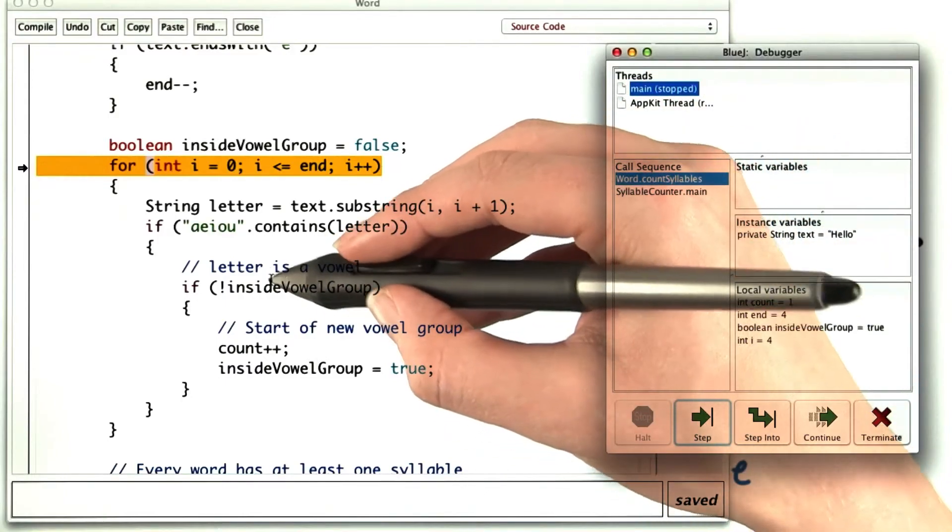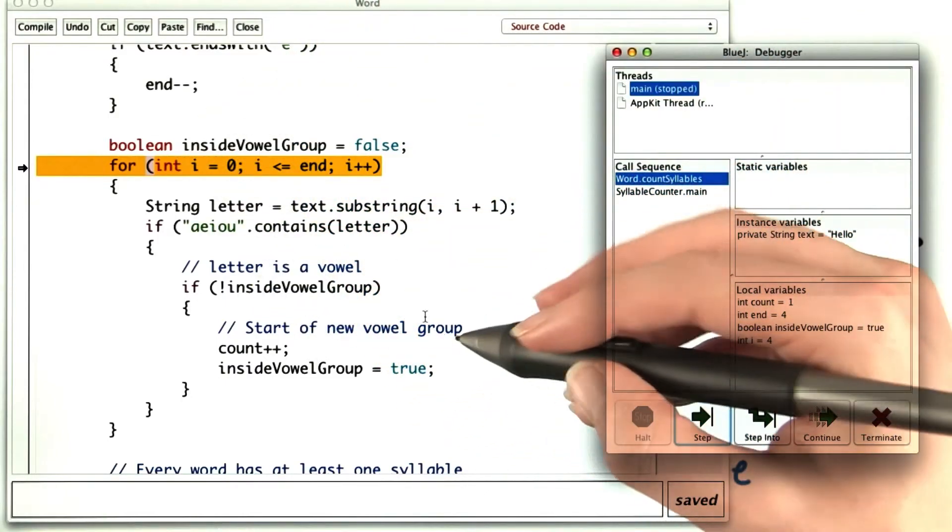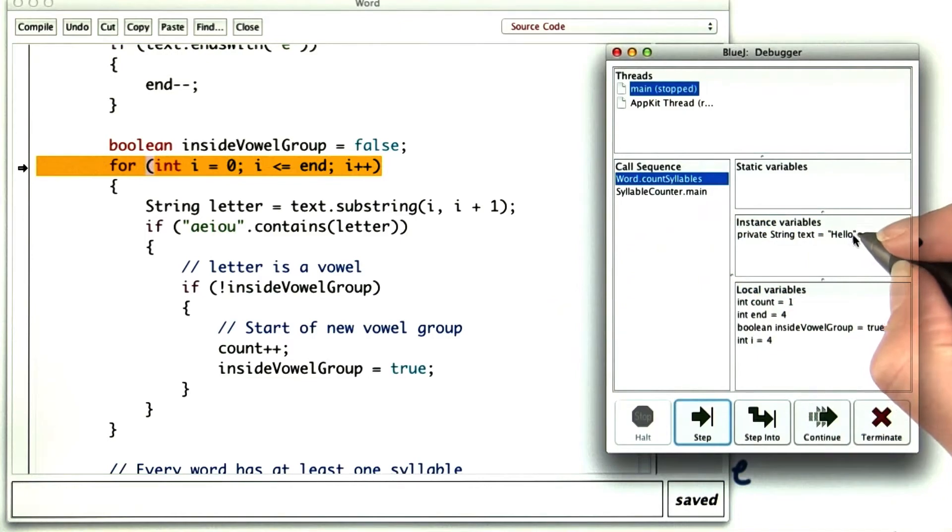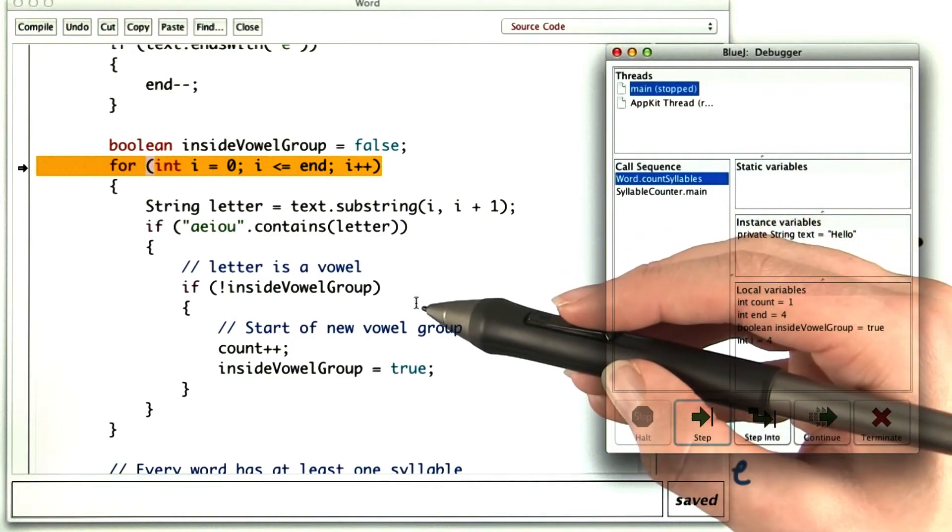That was bad. It shouldn't have skipped from here back up to the next letter. The O in hello is the beginning of a new vowel group, but the program didn't count it that way.